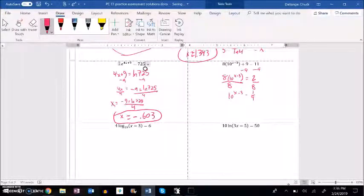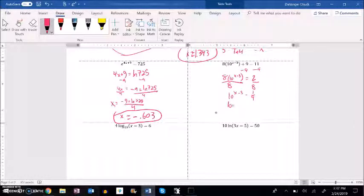I'm going to rewrite this as a log statement. That means that log of 1 fourth is equal to the exponent. Remember when I just write log that implies log base 10. Add 3 to both sides.